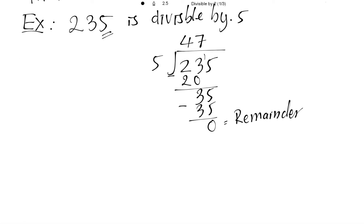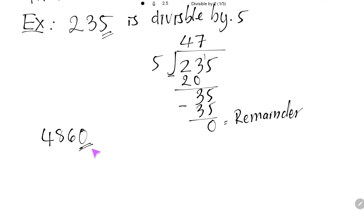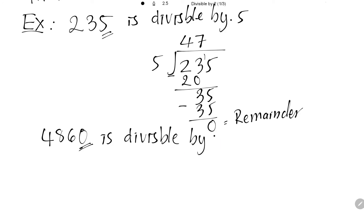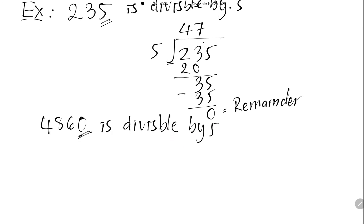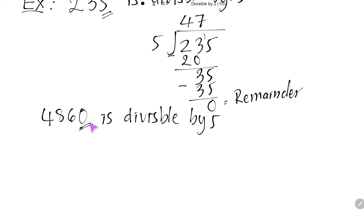Now another example. If I have the number 4860, the last digit is number 0. And then this number is divisible by 5, because the last digit is number 0.